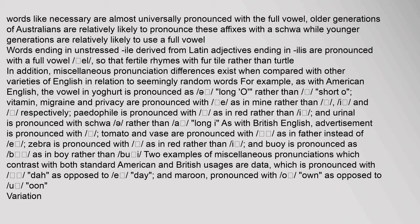Older generations of Australians are relatively likely to pronounce these affixes with a schwa, while younger generations are relatively likely to use a full vowel. Words ending in unstressed '-ile' derived from Latin adjectives ending in '-illus' are pronounced with a full vowel, so that 'fertile' rhymes with 'fertile' rather than 'turtle'. Miscellaneous pronunciation differences also exist — for example, the vowel in 'yogurt' is pronounced as long 'o' rather than short 'o', and 'vitamin', 'migraine' and 'privacy' are pronounced with a long 'i' as in 'mine'.